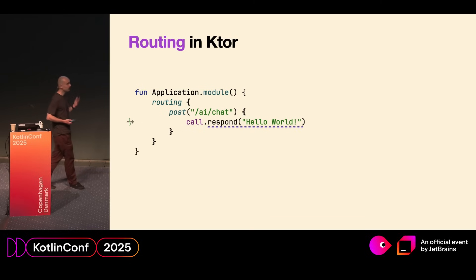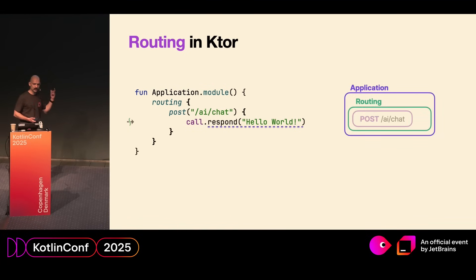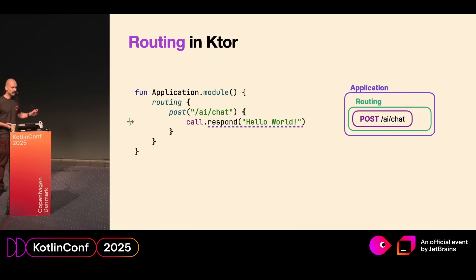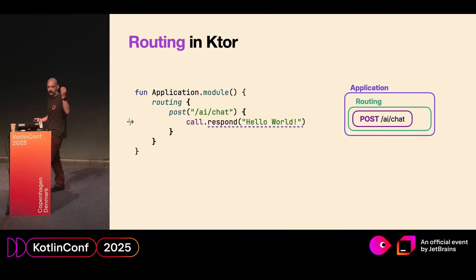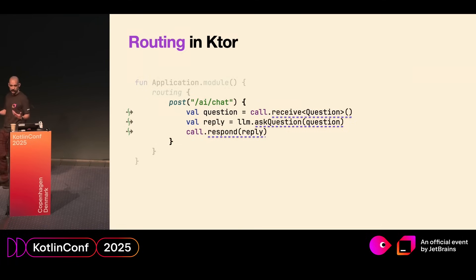And if you might notice, the respond function is a suspending function. So how is it possible that we can call it here? Well, when the Ktor application starts, we install the routing plugin and the routing plugin creates a new coroutine for every incoming request. And for that incoming request, it will call our route handler and therefore we are able to call suspending code inside this created coroutine.